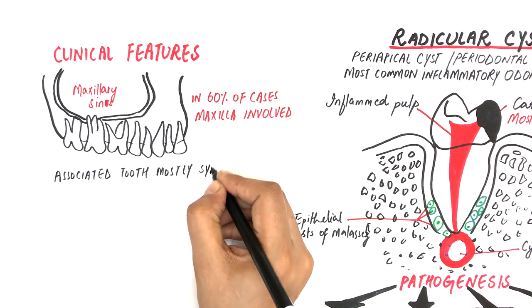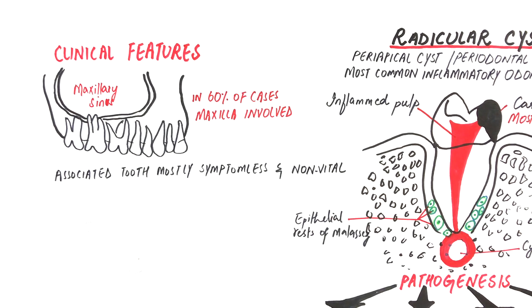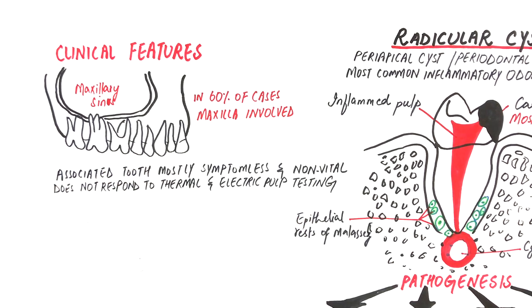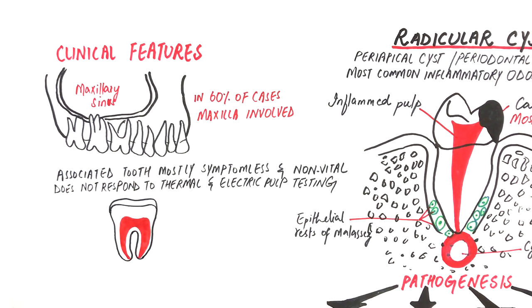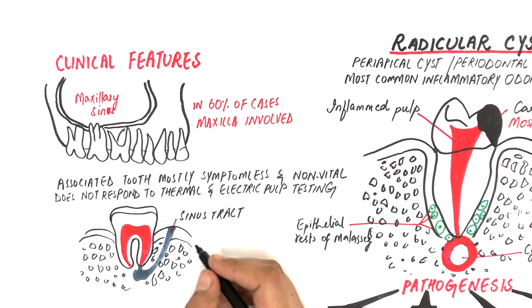The associated tooth is always symptomless and non-vital and does not respond to thermal and electric pulp testing. Pain may be present if the cyst is secondarily infected, resulting in intraoral or extraoral sinus tracts.